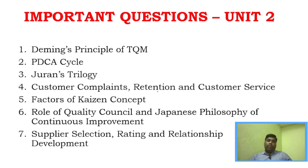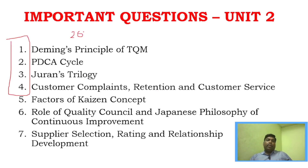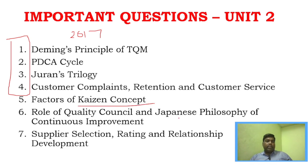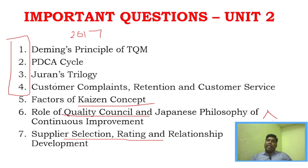For Unit 2, study around 7 questions. From the 2017 regulation, Unit 1 had a lot of questions — looking at university question papers, 4 questions repeat across all papers. You cannot neglect any of them. Very important questions include: Japanese philosophy of continuous improvement, quality council and its role, and supplier selection, rating, and relationship development. Also include employee involvement and employee satisfaction.